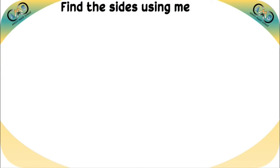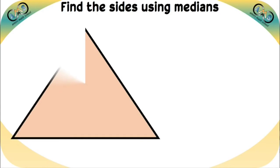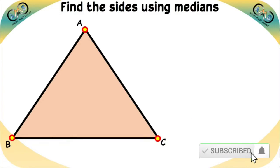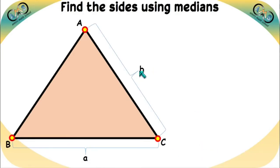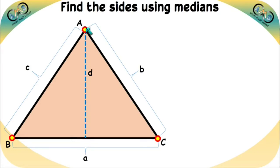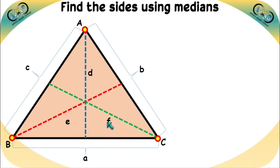Let's start the topic: find the side using the medians. For any triangle, the three vertices are A, B, and C. Opposite vertex A, the side length is a; opposite vertex B, the side length is b; and opposite vertex C, the side length is c. The medians of this triangle have lengths D, E, and F. The main aim of this video is to find the lengths a, b, and c when the median lengths D, E, and F are given.